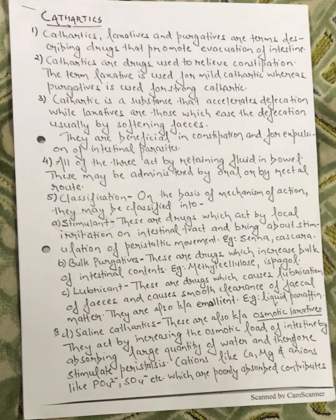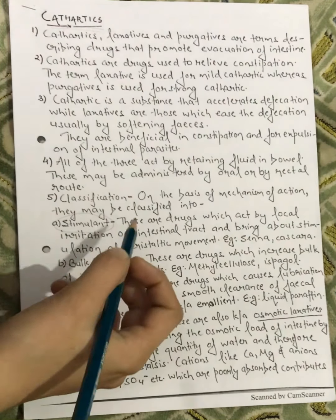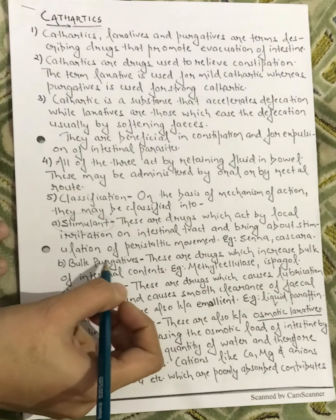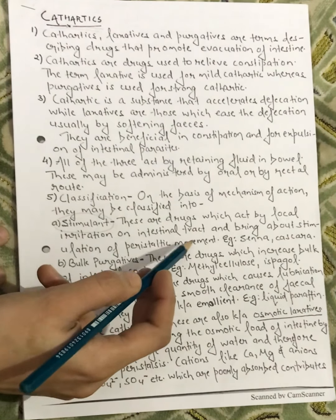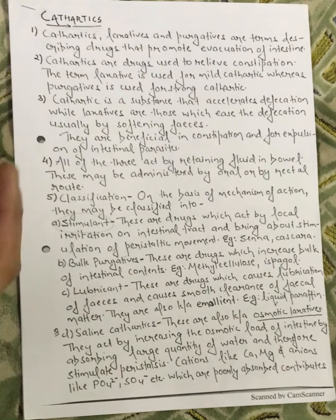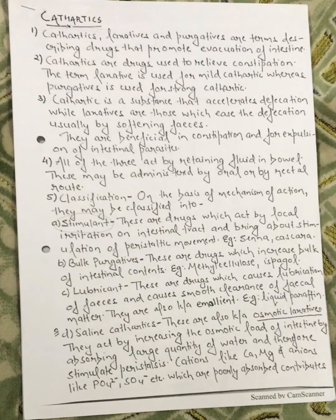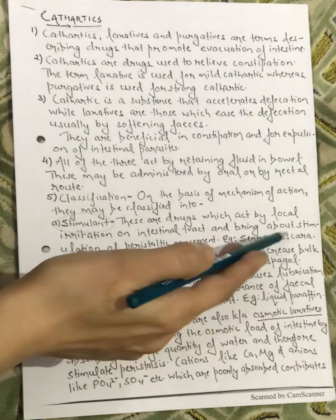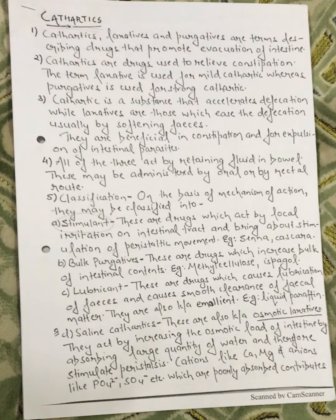Stimulants are drugs which act by local irritation of the intestinal tract and bring about stimulation of peristaltic movement. They enhance peristaltic movement and reduce local irritation in the intestinal tract. Examples include Senna and Cascara, which are plant-derived drugs.